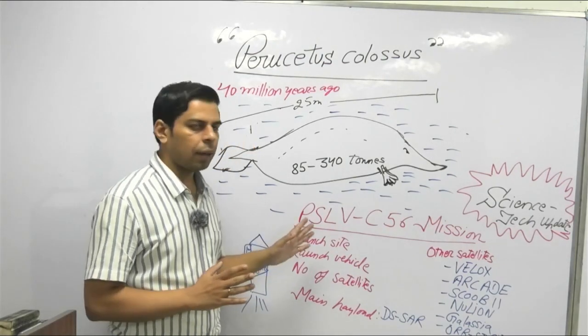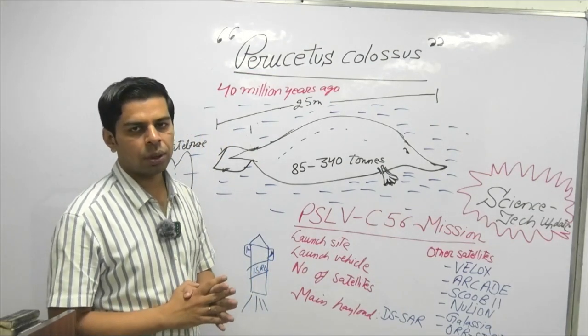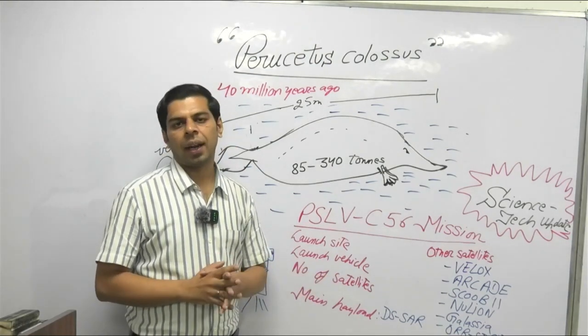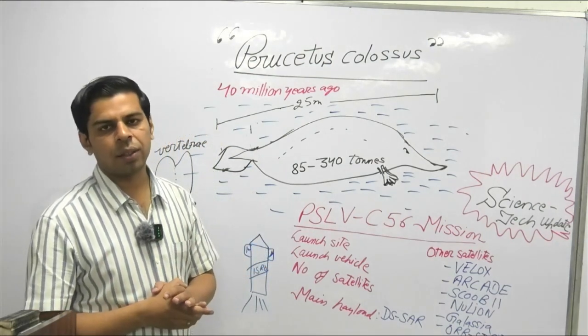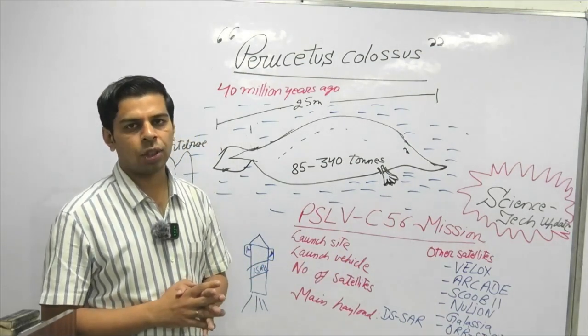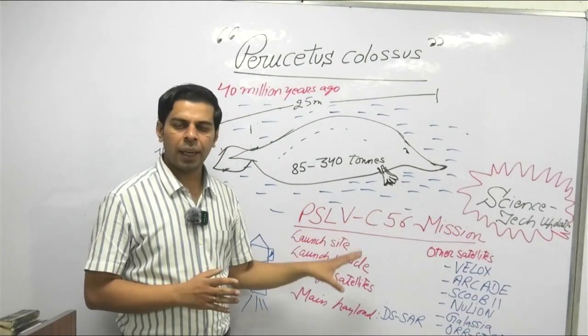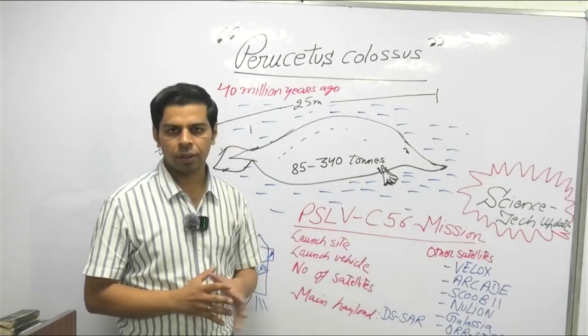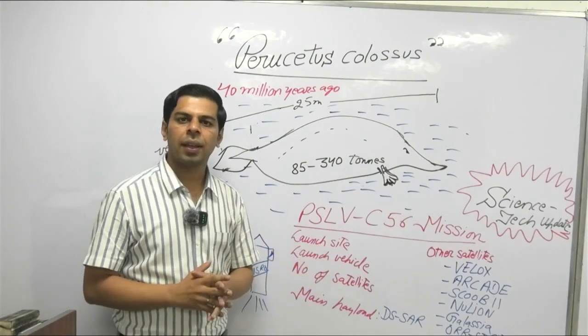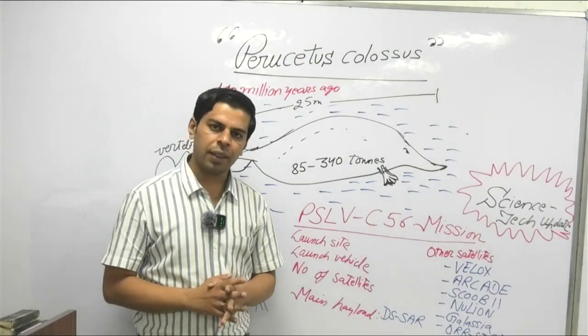The second major segment, as we all know, the newspapers are now covering the Chandrayaan 3 mission which is going to be the most ever significant achievement in ISRO space program this year. It is likely the rover or lander are likely to make a soft landing on August 23rd. So we are making track of it. But meanwhile, ISRO has made once again the nation proud by successfully launching once another PSLV mission. We will also be highlighting few facts about PSLV C-56 mission. So the protocol for space current affairs remains the same. The launch site was once again Sriharikota high altitude range which is popularly known as Satish Dhawan Space Center.